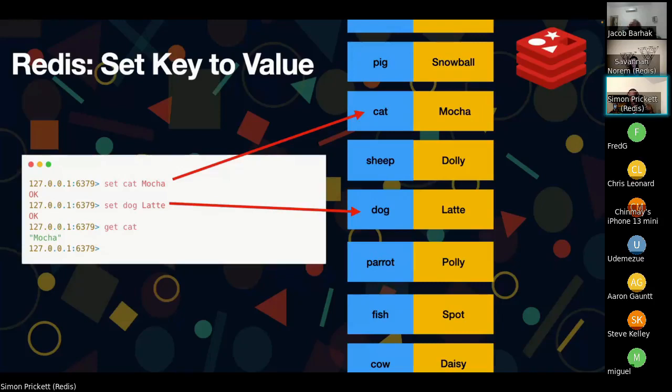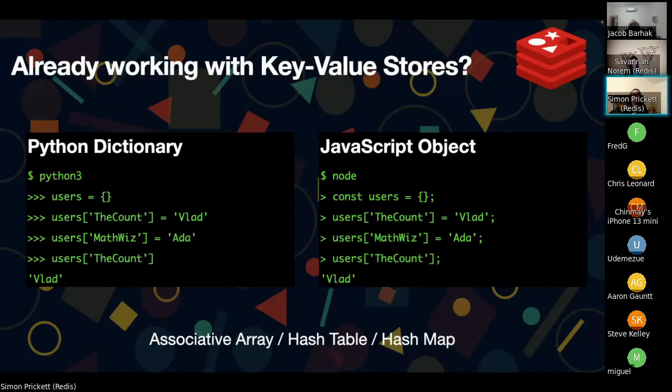Other products do this too — you might have heard of memcache, which is a key-value store that stores strings. One thing with Redis is it does more than that. If you're using Python, every time you use a dictionary, that's a key-value store. If you think of 'users' as an instance of a key-value store, you can put things in it — users['thecount'] = 'Vlad', users['mathwiz'] = 'Ada' — and then ask what's stored at a given key. JavaScript objects work similarly.